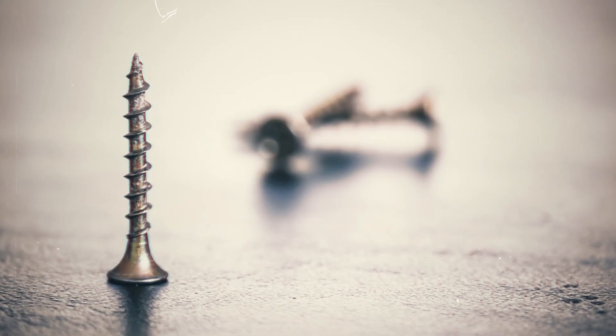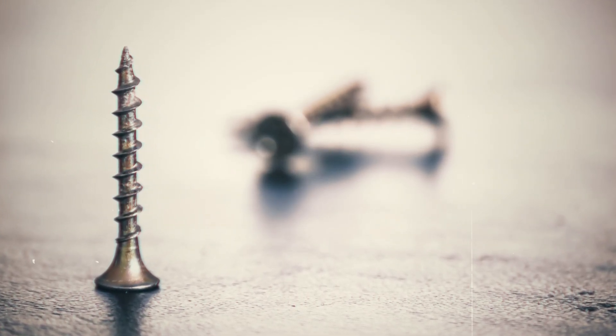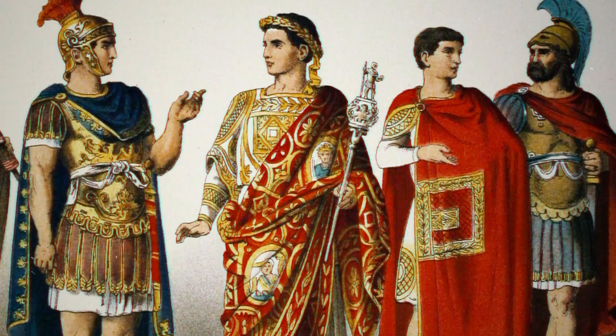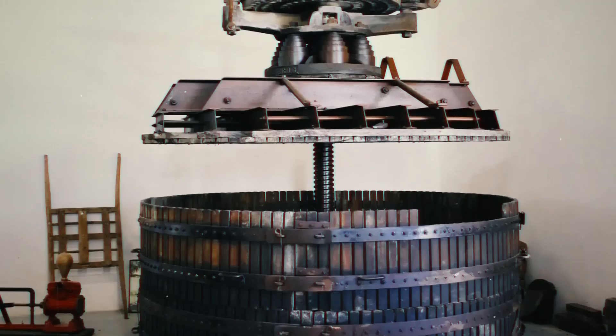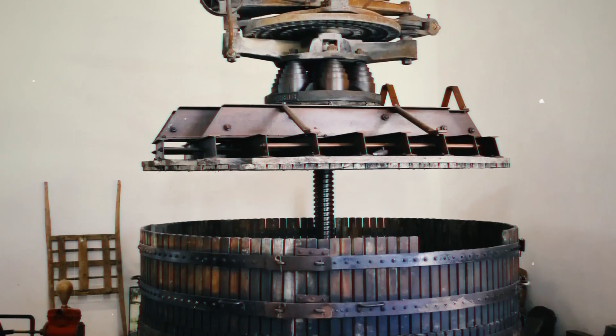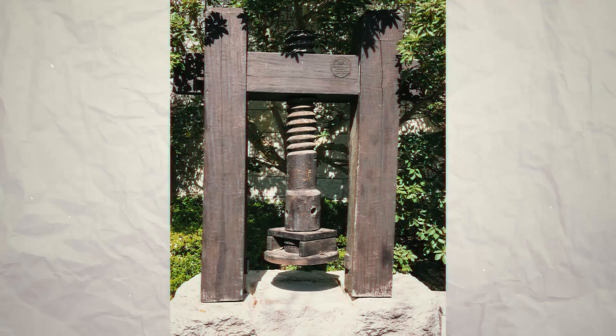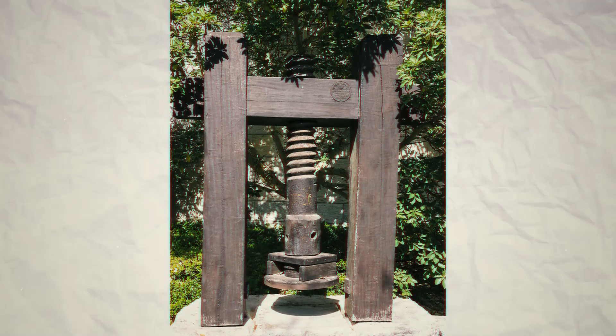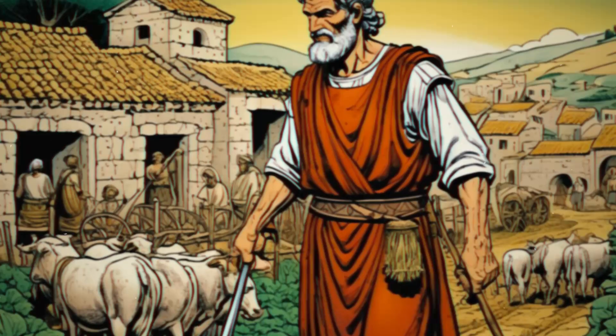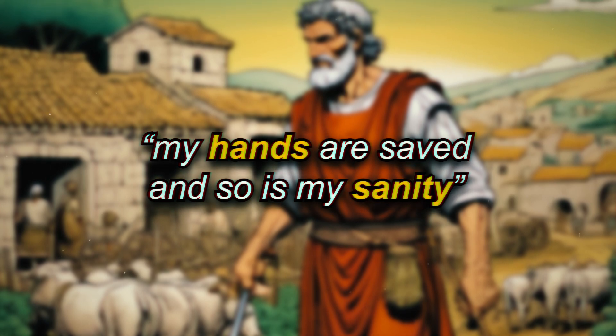But how did this idea evolve into the first true screw? The Romans took these ideas and improved them. They used screws in presses, which changed industries like wine and olive oil production. Pressing olives by hand for oil would take forever, but with a screw press, the work became much faster. Imagine a Roman farmer saying, my hands are saved, and so is my sanity.